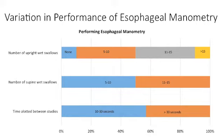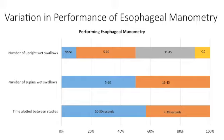Prior to getting started with the RAM methodology, we gathered baseline data about the experts' performance patterns and found that variations in practice exist even amongst these experts from centers of excellence. In round one of RAM, the experts independently ranked each potential measure for appropriateness based on a scale of one to nine — one being highly inappropriate and nine being highly appropriate. Experts were instructed to rank based on their personal judgment and were also given the opportunity to reword measures and propose new measures.